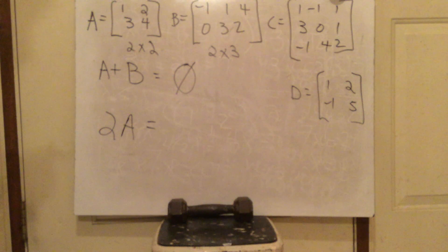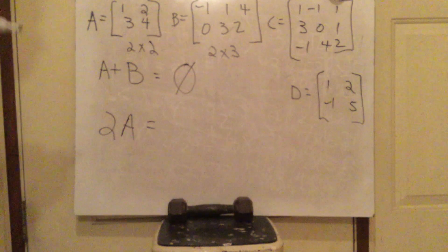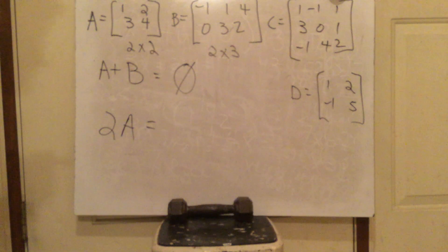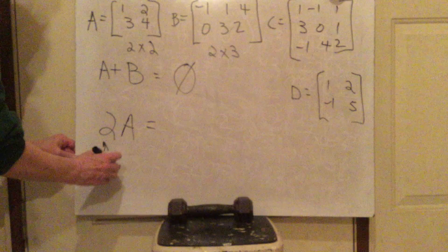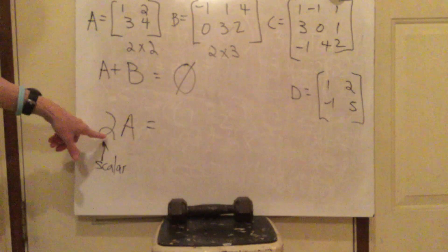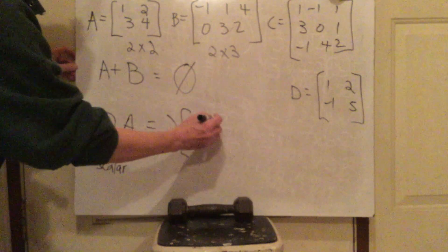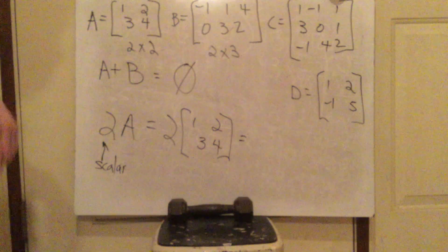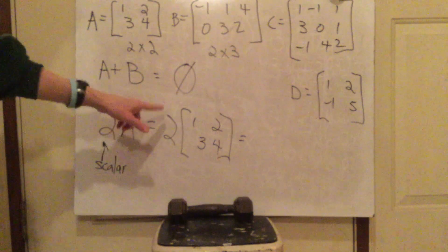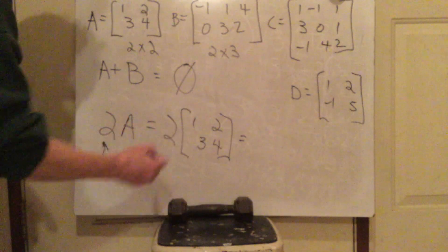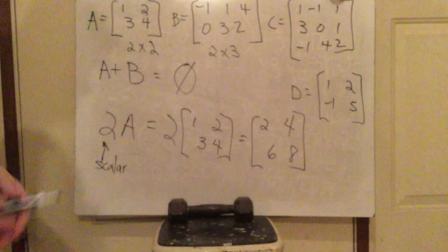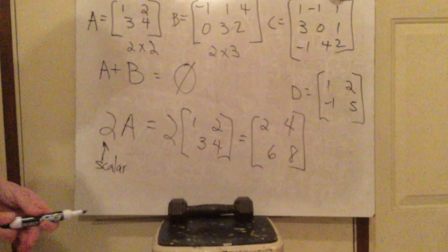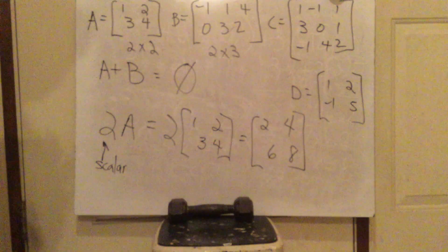Write down the rule: matrices cannot be added or subtracted unless they have exactly the same dimensions. Now for 2A — the 2 is called a scalar, a real number. A scalar times a matrix is always doable regardless of dimensions. You just distribute: take two times everything in there, so your answer is 2, 4, 6, 8. Two times every single number, don't change the order.